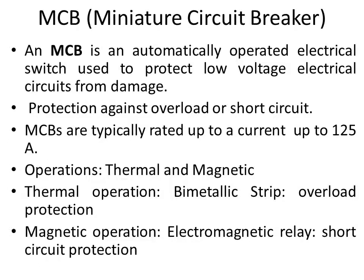The protective devices are MCB and ELCB. MCB stands for miniature circuit breaker and can also be used as a main switch. An MCB is an automatically operated electrical switch used to protect the installation from overload or short circuit conditions. There are two types of protection: overload protection and short circuit protection, corresponding to two operations — thermal and magnetic.